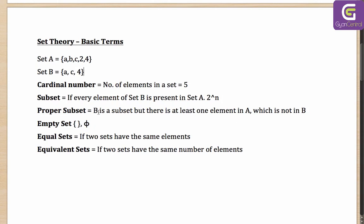A proper subset is when B is a subset but there is at least one element in A which is not part of set B. The number of proper subsets is 2 to the power of n minus 1. The equal set is left out — if two sets have the same elements they are equal, not proper subsets. So {a, c, 4} is a proper subset, but {a, b, c, 2, 4} is not — it is an equal set.